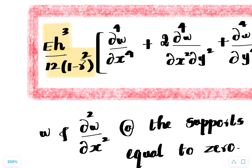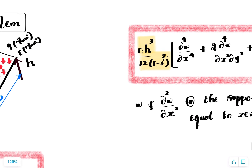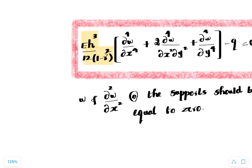Coming to the boundary conditions: because it is a simply supported rectangular plate, its deflection is going to be zero on all four sides. Also, ∂²w/∂x² = 0 and ∂²w/∂y² = 0 at the supports — these are analogous to bending moment conditions in beams. We will be using these boundary conditions to justify the trial solution we are going to assume.